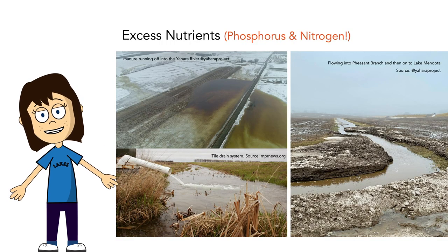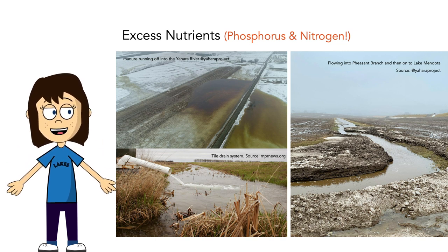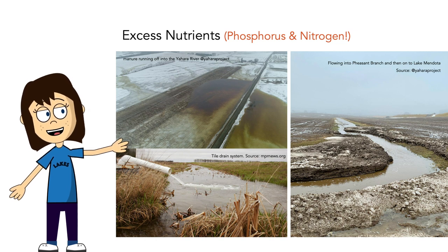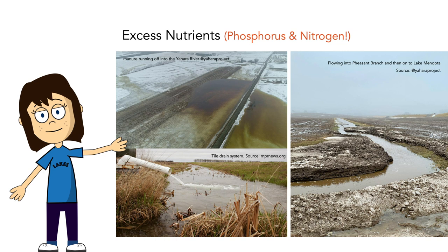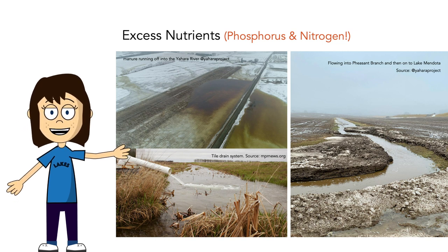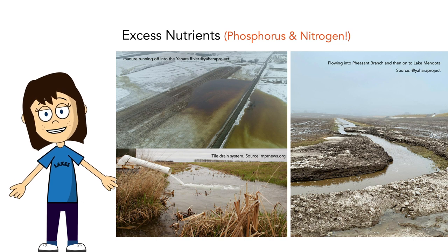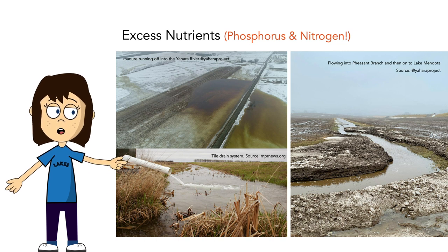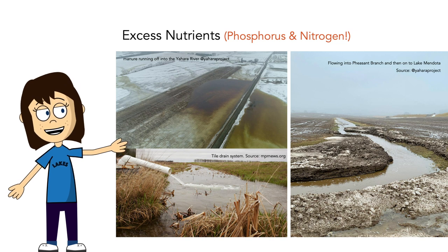Where are all these nutrients coming from? They're mostly coming from agriculture. Here are photos taken from the Yahara watershed — on the top left, manure has been applied to a frozen field, and when that snow starts to melt, that manure runs off directly into the local stream, and that stream then drains into Lake Mendota. So instead of that fertilizer being used to fertilize crops like it's intended to, it just ends up in the lake. Here's another picture of water flowing off an agricultural field directly into Pheasant Branch, which then feeds into Lake Mendota.